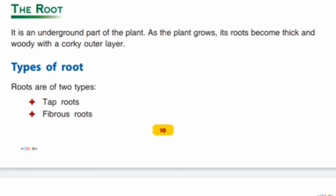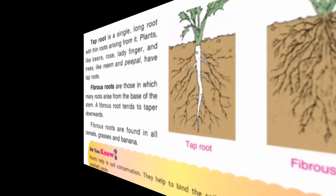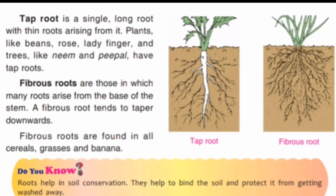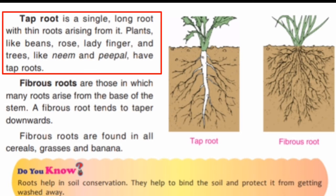There are two types of roots: tap root and fibrous root. A tap root is a single long root with thin smaller roots arising from it. Examples of plants with tap roots include beans, ladyfinger, and trees like neem and peepal.